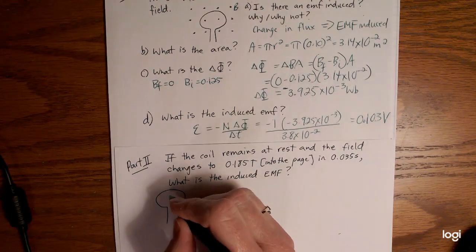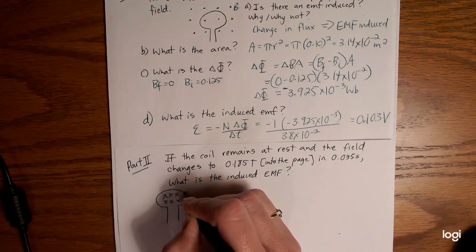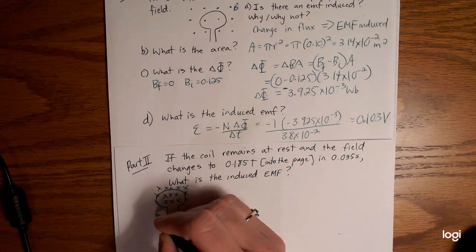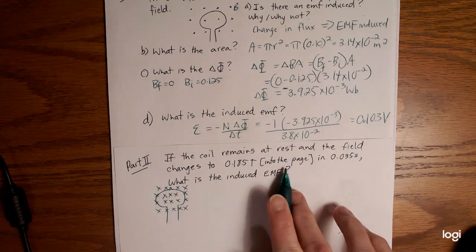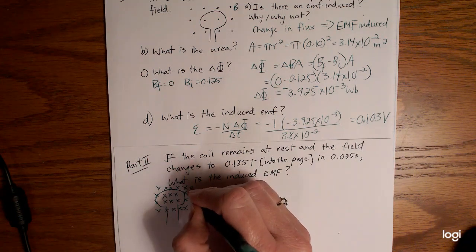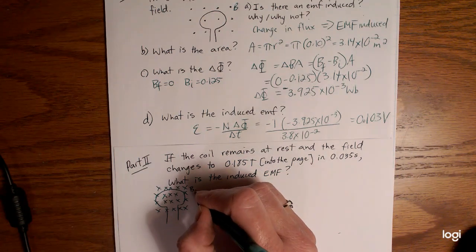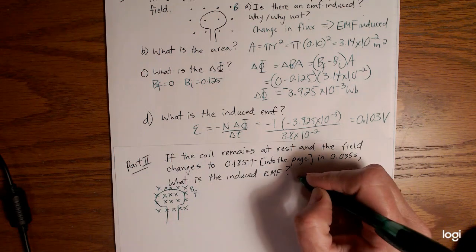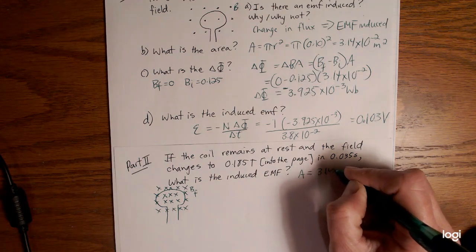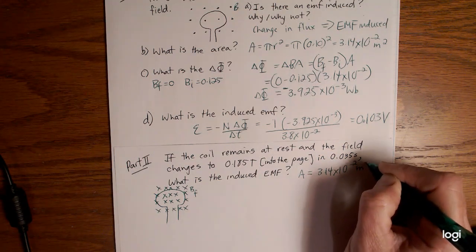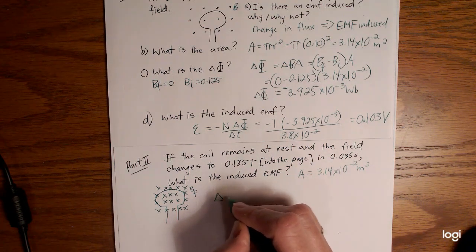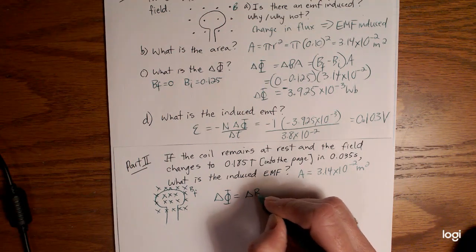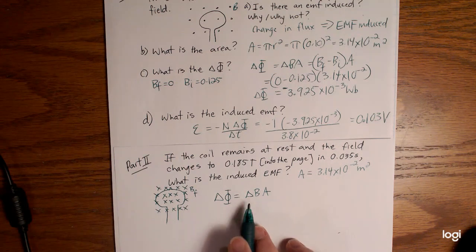So now that means that we have a situation where our new field, a bit stronger, and now it's going into the page. So this is our new magnetic field, our B final. So in this case what is the induced EMF? So now nothing's going to change, we're still going to have the same area, that 3.14 times 10 to the negative 2, so we don't have to calculate that again. And we're still looking for our change in flux first.